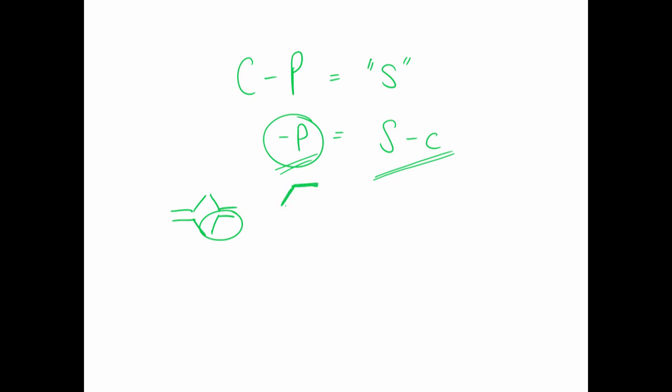With a short put position, consider the sensitivities. A long put has delta close to minus 1 when deeply in the money and close to 0 when out of the money. Negating that for the short put: delta is close to plus 1 when in the money, still close to 0 when out of the money, and close to plus one-half at the money. So the delta of a short put is between 0 and 1 — positive.